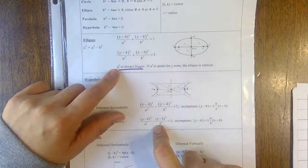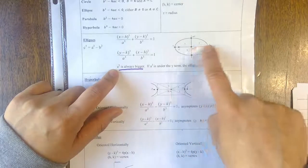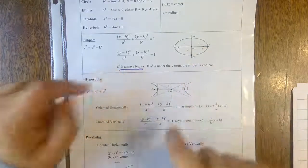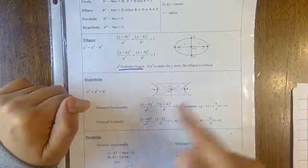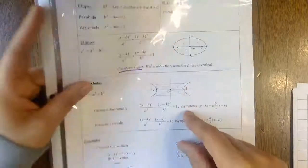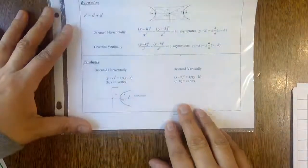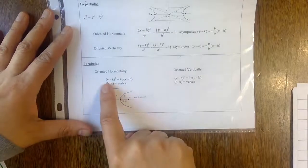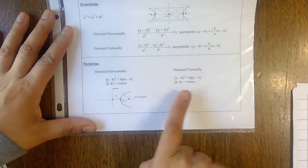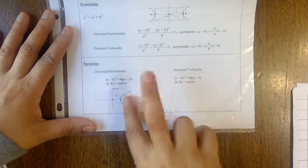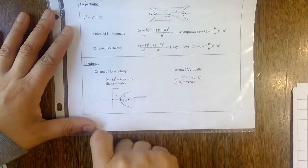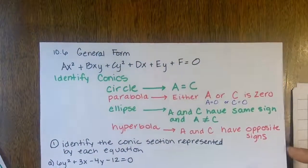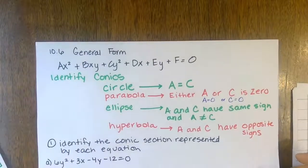For an ellipse, your a value is always the larger number. For a hyperbola, your a value can be the bigger or smaller number — it doesn't really matter. For parabolas, this is the standard form depending on orientation, your vertex is h, k, and you have the p value.